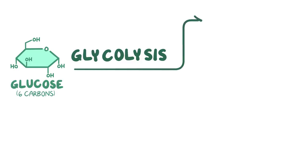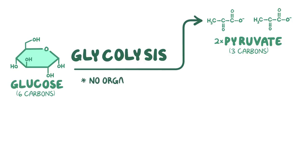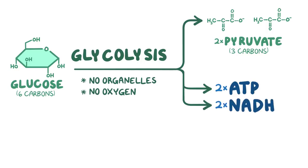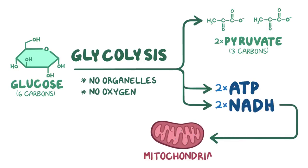Alright, as a quick recap, glycolysis breaks down a 6-carbon glucose molecule into two 3-carbon pyruvate molecules, without the use of any organelles or oxygen. Overall, there's a net production of 2 ATP and 2 NADH molecules, which in the mitochondria make roughly 3 ATPs per NADH.